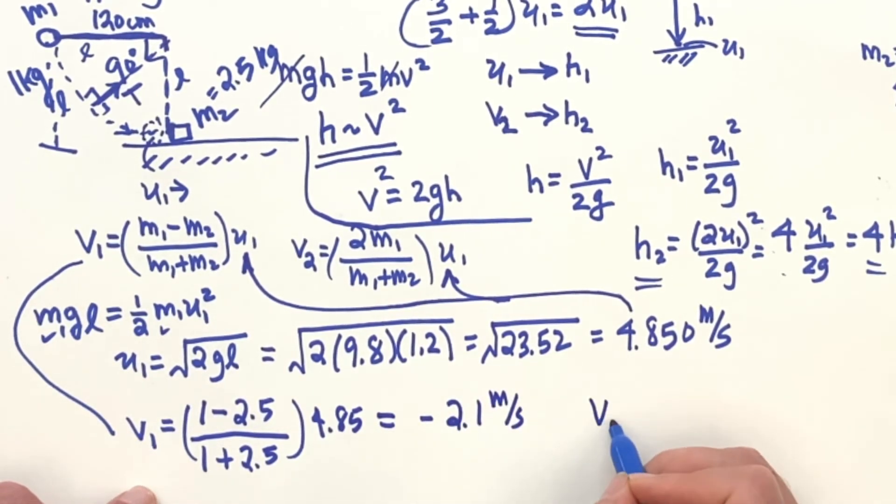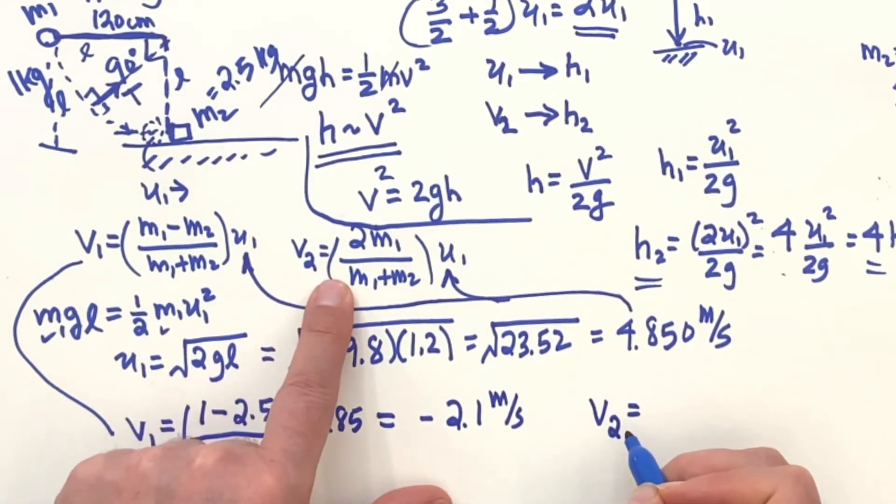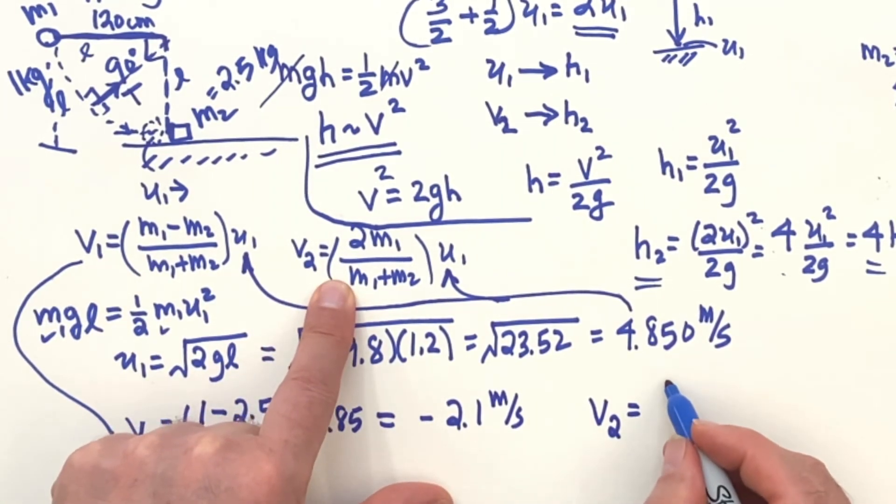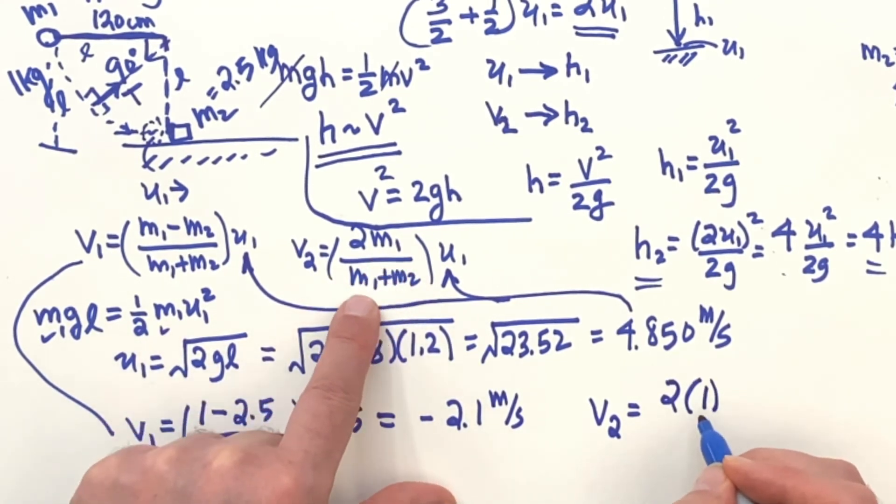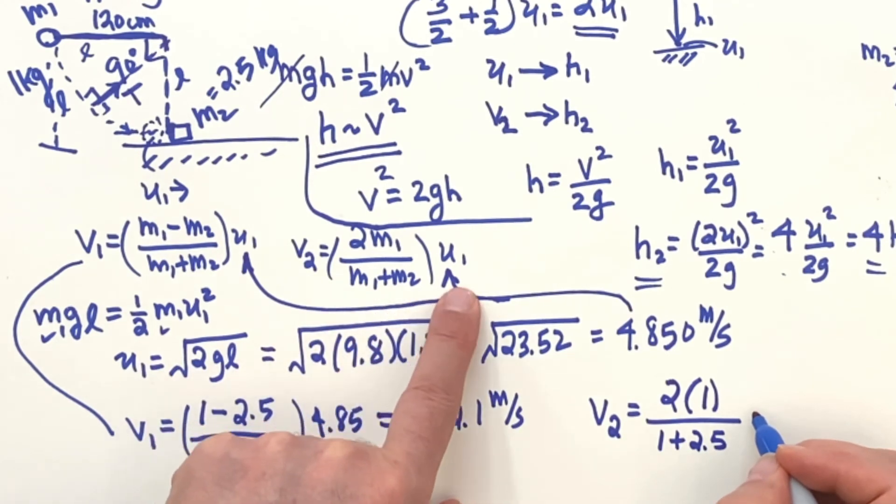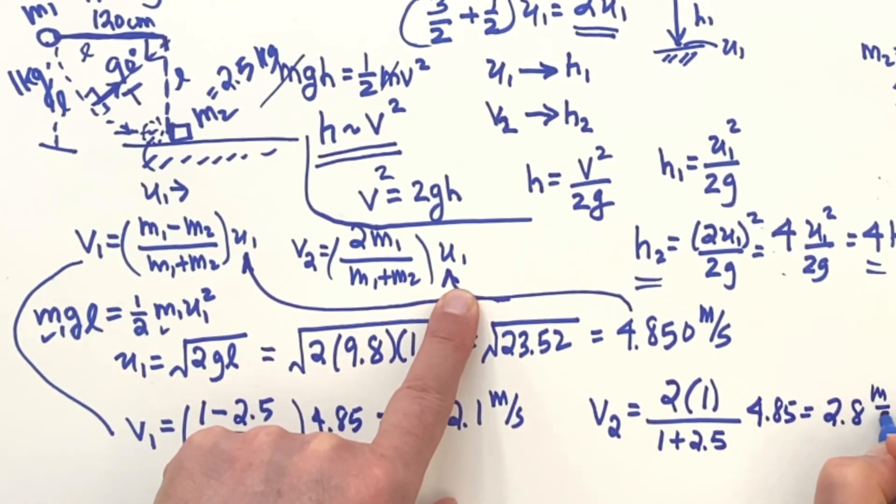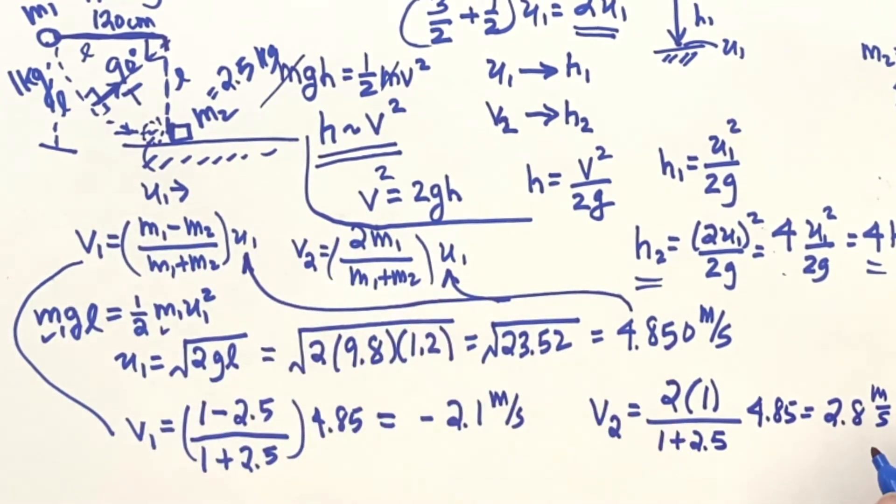And when you do with the second mass, you'll have 2 times, this is M1, so that's a 1. And then we have 1 plus 2.5. And this will be the 4.85, and that's going to be 2.8 meters per second. Notice that that second mass takes off, but the first mass reflects back. That's nice.